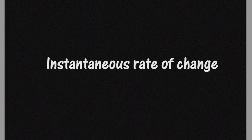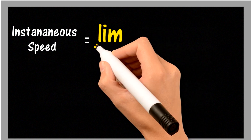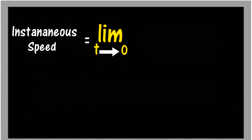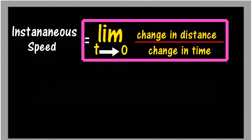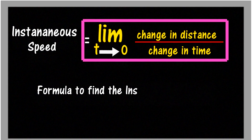The formula of instantaneous speed — for those who may not know calculus — is: instantaneous speed equals the limit as time approaches 0 of the change in distance divided by the change in time. Time approaching 0 means time is not zero, but it is living in the neighborhood of 0. This formula is used to find the instantaneous speed of any object.